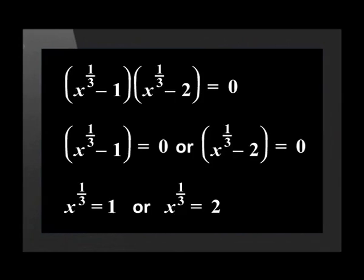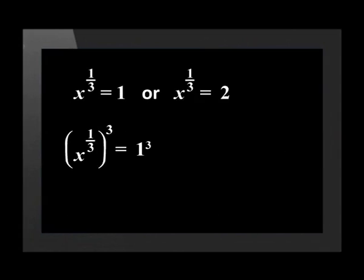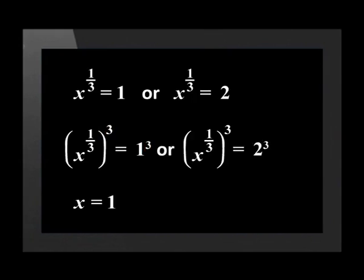From the first bracket, we get x to the power of one-third equals 1. The second bracket gives x to the power of one-third equals 2. To get rid of the power on the left-hand side, we have to cube both sides. So we get just x on the left-hand side and 1 cubed on the right-hand side, which equals 1. Similarly, we solve the second equation to get x equals 8.